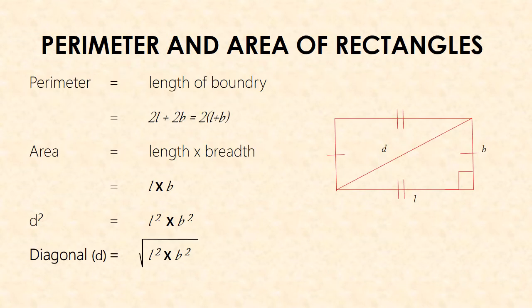Next, perimeter and area of rectangles. For the rectangle, the perimeter equals the length of the boundary, that is 2L plus 2B. We have 2 length sides and 2 breadth sides, so we can calculate the value using the formula 2 into (L plus B). Then we can calculate the area using length into breadth, that is L into B.